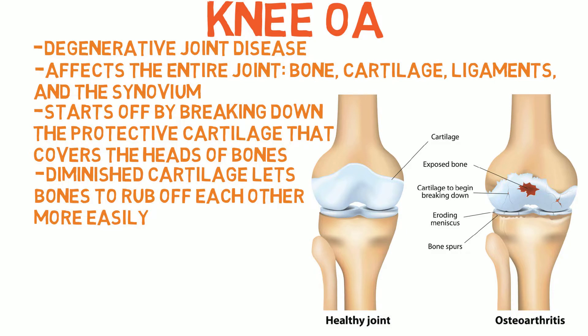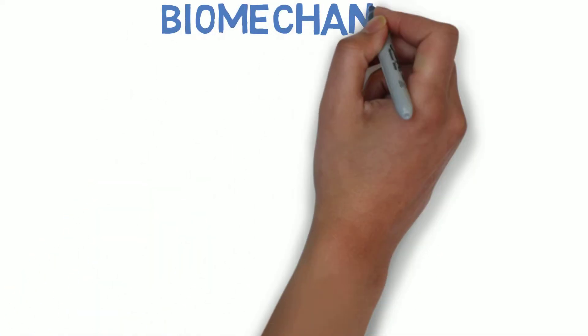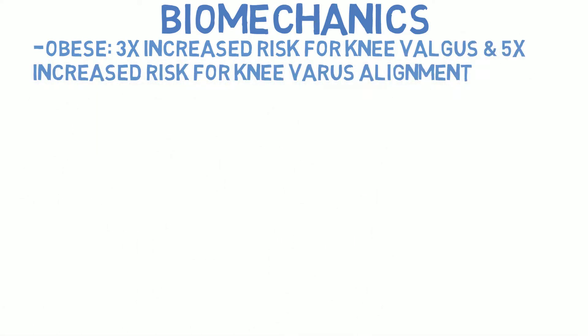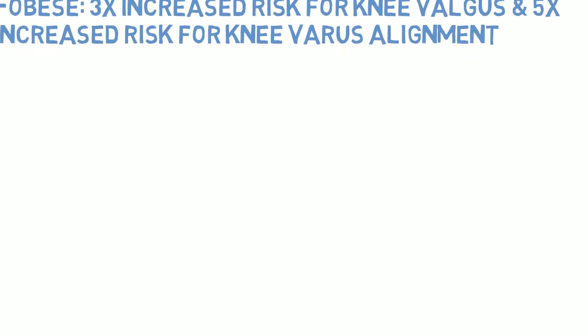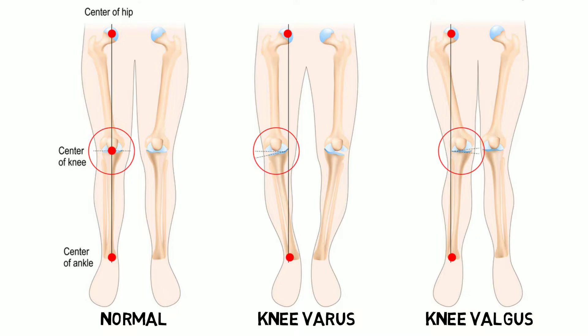So now that we know what OA is, why do those with excess body fat seem to be more likely to develop the condition at the knee? Well, one reason could be from the altered biomechanics that happen as a consequence. A study by Brouwer et al found that those who were obese had approximately a 3-fold increased risk for knee valgus as well as a 5-fold increased risk for knee varus alignment. Knee valgus, often called knock knees, is a condition where the knees angle in and touch each other when the legs are straightened. In contrast, knee varus or bow legs is when the knees angle outward and become more distant from each other, also when the legs are straightened.